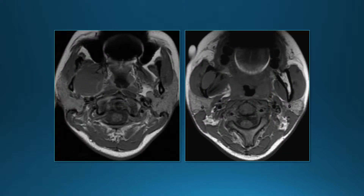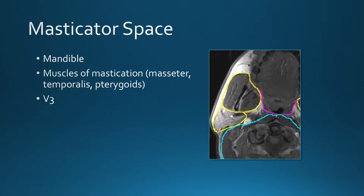Now we're going to look at some spaces individually. Here we have a mass involving the muscles of mastication and the mandible, so we're dealing with a mass in the masticator space. The masticator space contains several structures: the mandible, muscles of mastication including the masseter, temporalis, and pterygoid muscles, and the V3 division of the fifth cranial nerve.